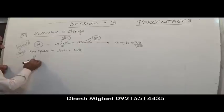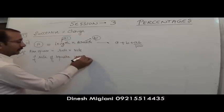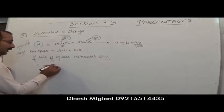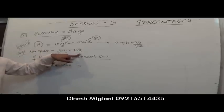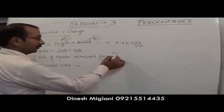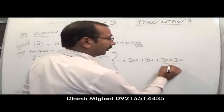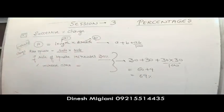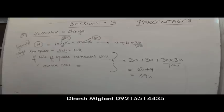For example, if the side of a square increases by 30%, the area is side × side. Both sides increase by 30%, so overall percentage change in area = 30 + 30 + (30 × 30)/100 = 60 + 9 = 69%.